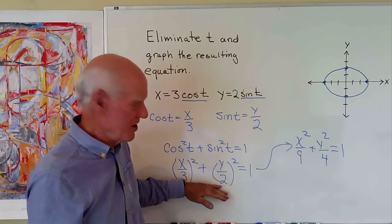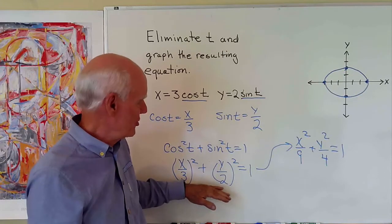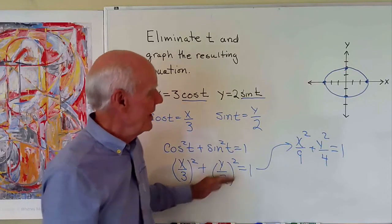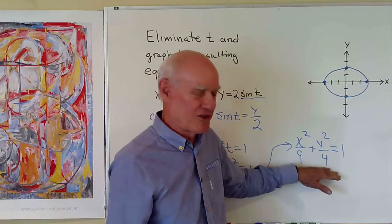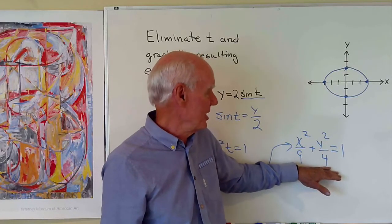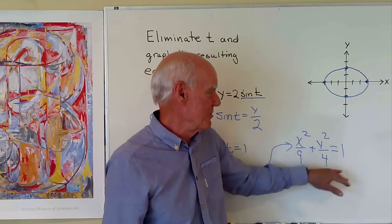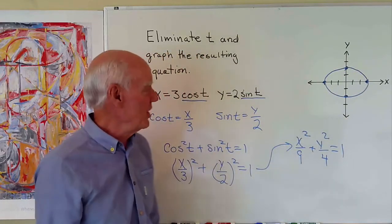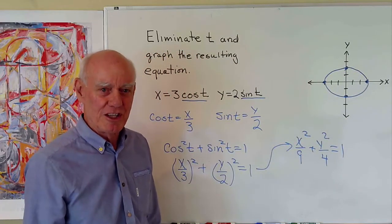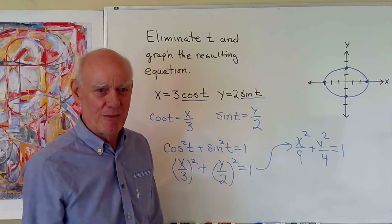When I go from this step to this step, you don't see t anymore. It's just the variables x and y. Now I've got it in terms of something I recognize from my algebra classes, the equation of an ellipse. So I simply graph that ellipse right there. So that's a look at eliminating the parameter t from a pair of parametric equations.